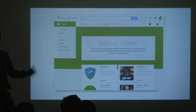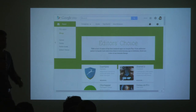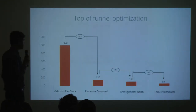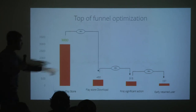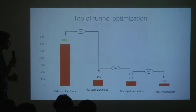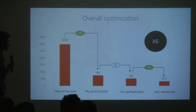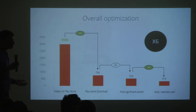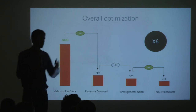So everything is connected. If I don't get 1,000 at the beginning of my funnel but instead 3,000, it really makes a difference at the end. And if I include all the improvements across the funnel, I get to something that is six times better. Six times better is a huge difference in terms of retention. And these are not impossible things to do — it's the same app, but we improved things one by one.